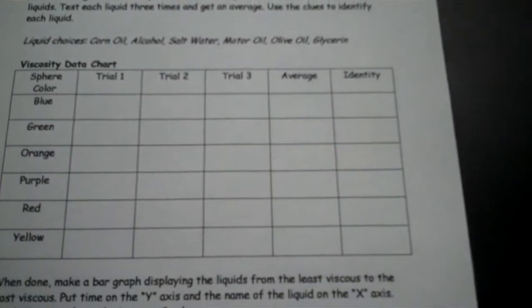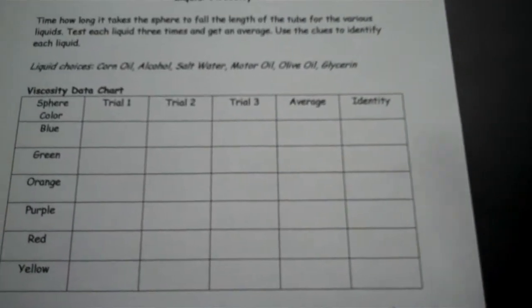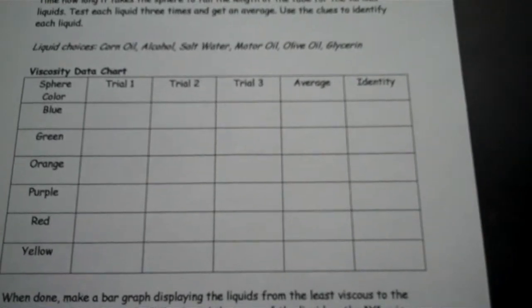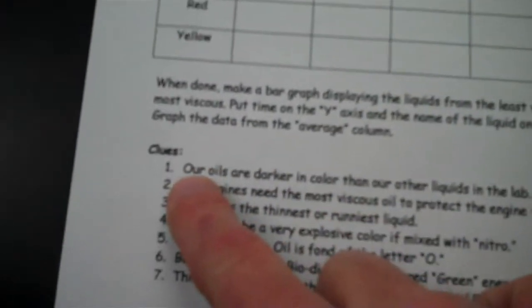The ones that have the longest amount of time are the most viscous. Those that are the fastest are the least viscous. Viscosity looks at thickness—thick means viscous. Low viscosity means it's very runny. Now let's look at how you figure things out.